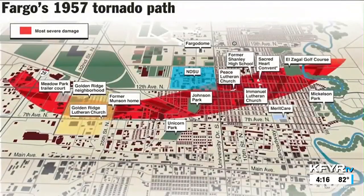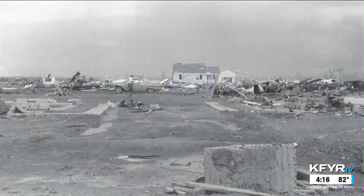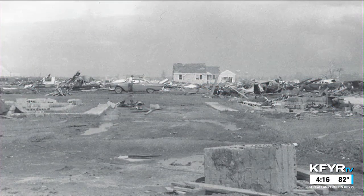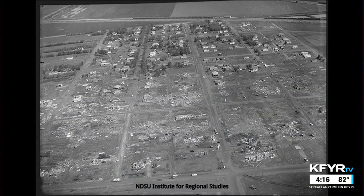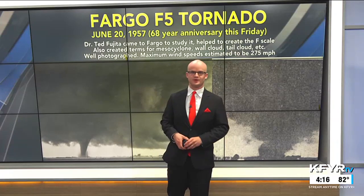The tornado carved a path right through the center of Fargo, gradually moving east then northeastward. The Golden Ridge area of Fargo is where the most intense damage occurred — that's where it was classified as F5 damage and where many of the fatalities happened. Homes were completely obliterated and swept from their foundations, the highest-end classification that drives the F5 rating.